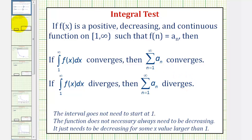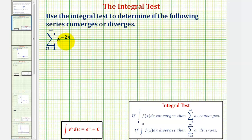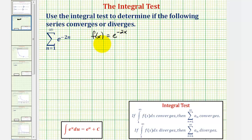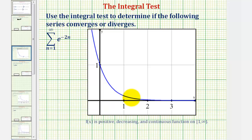Going back to our example, notice the formula for the nth term is e raised to the power of negative two n, and therefore our function will be f of x equals e raised to the power of negative two x. Notice f of n would equal a sub n. For the next step, we want to make sure this function is positive, decreasing, and continuous. A quick, easy way to do this is to look at the graph of the function on the interval from one to infinity. Here's the graph of our function, and notice how it is positive, decreasing, and continuous on this interval.